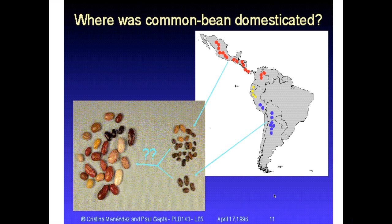Where were common beans domesticated? Wild beans range from northern Mexico — Chihuahua — all the way down to northern Argentina, as illustrated in the map on the right-hand side. The seeds in the center of the screen are wild beans — very small compared to the domesticated types on the left-hand side. The larger beans are found generally in South America or the Andean region, more so than in Middle America. Prior knowledge placed the original origins of beans in Ecuador and northern Peru, but that has since been revised fairly recently.